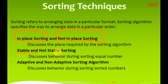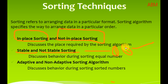The second category is stable versus non-stable algorithms, which describes the behavior of the sorting algorithm. For example, if an array has two equal elements — say, two 3s — and after sorting they remain in their original relative order, it is called a stable sorting algorithm. If the positions of equal elements change, it is called a non-stable algorithm.